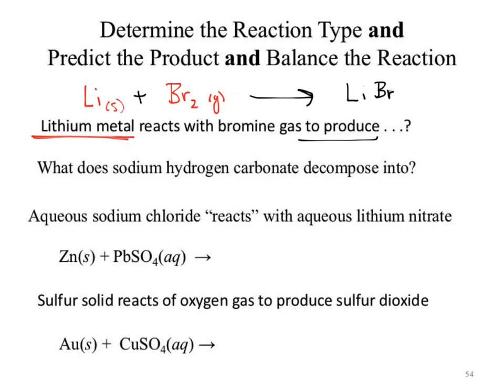Lithium has a charge of +1. What's the charge on bromide? Negative 1. Do those charges balance as 1 and 1? Yes — they neutralize their charge. Our product is lithium bromide, and that is now the correct formula. Once I have the correct formula, I can then go through and initiate balancing the reaction. We can't create or destroy matter. I start with one lithium and two bromines, yet I'm ending with one lithium and one bromine — I cannot destroy a bromine atom.